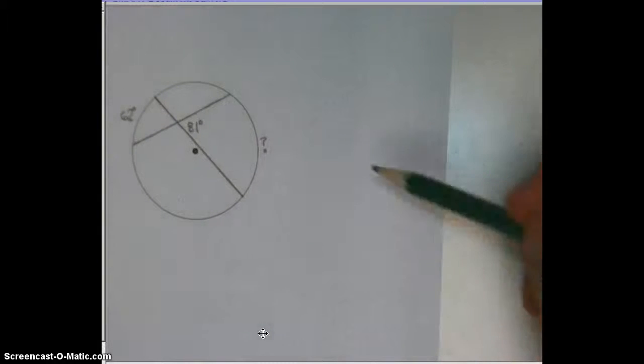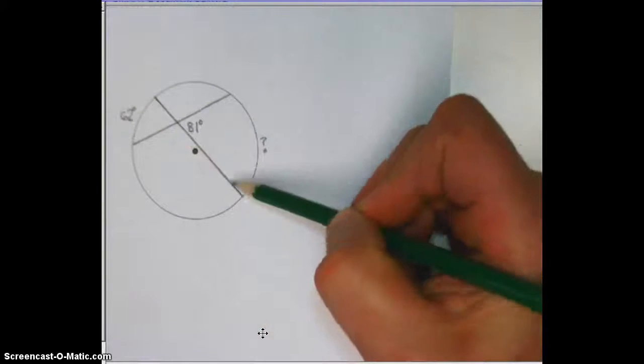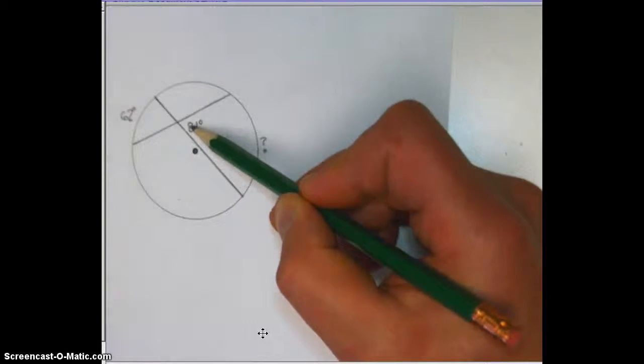So, normally when you have two chords intersecting inside a circle, you would take the two arcs and divide by two to get this angle right here or here.